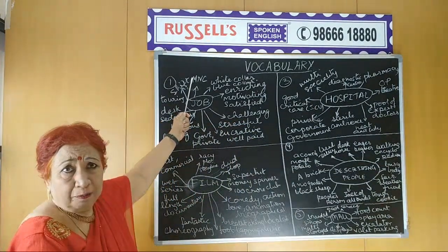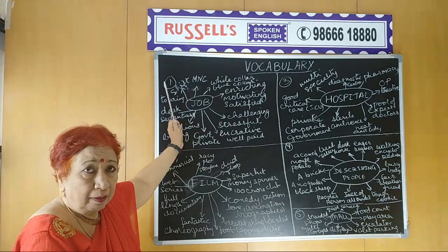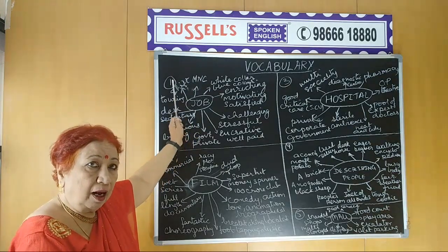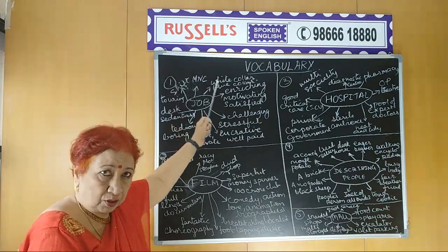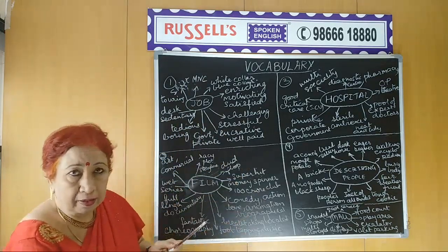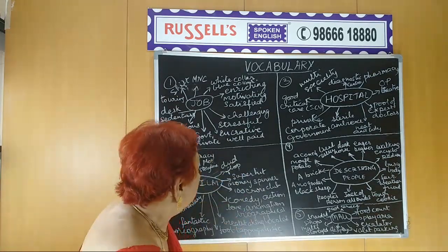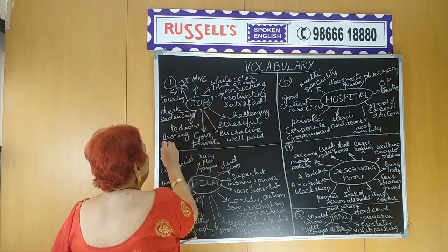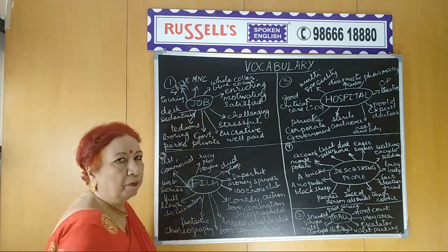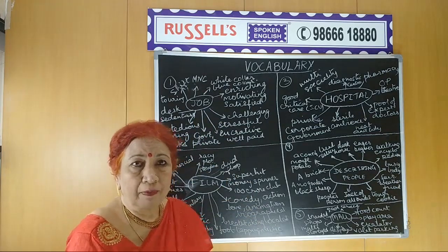Today everyone is aiming for an MNC — a multinational company. Most youngsters are aiming for jobs in a multinational company for a variety of reasons: for the kind of exposure, the kind of payment, and the kind of perks — the additional advantages you get from working in a particular place. So an MNC job is what most people aim for.